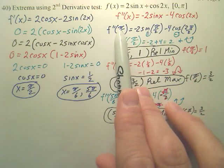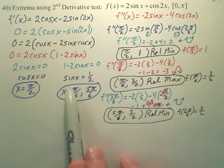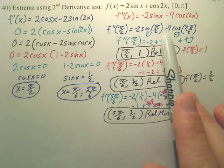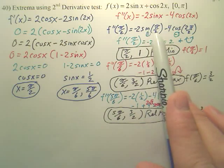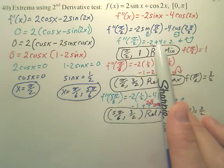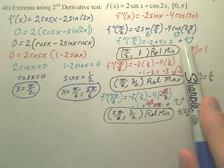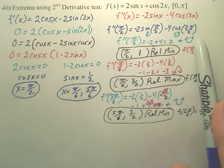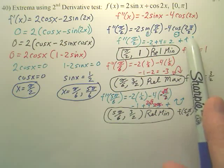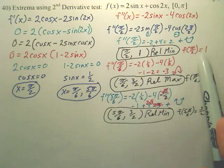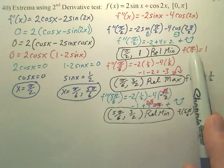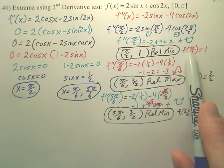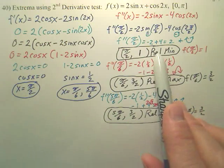Now plug in pi over 2, pi over 6, and 5 pi over 6 into the second derivative. For pi over 2: negative 2 times 1 is negative 2, and negative 4 times negative 1 is 4, giving a positive result. Since it's positive, that means concave up, so at pi over 2 it is a relative minimum. Plug pi over 2 into the original equation to get the actual output — that coordinate is a relative min.